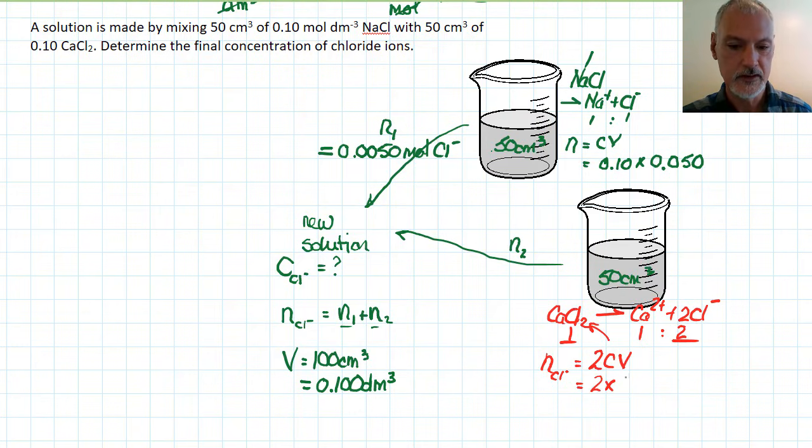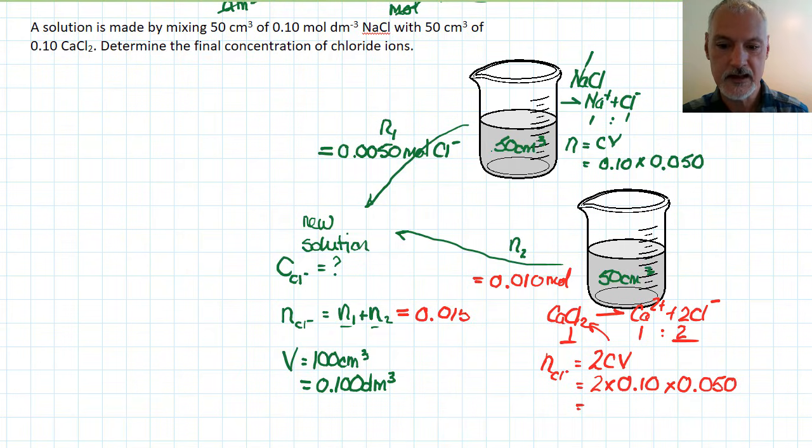So my number of moles of chloride ions is going to be 2 times the concentration and volume of this solution. So 2 times my 0.10 times my volume converted into liters or decimeters cubed. That gives me the number of moles of this material as 0.010 moles.